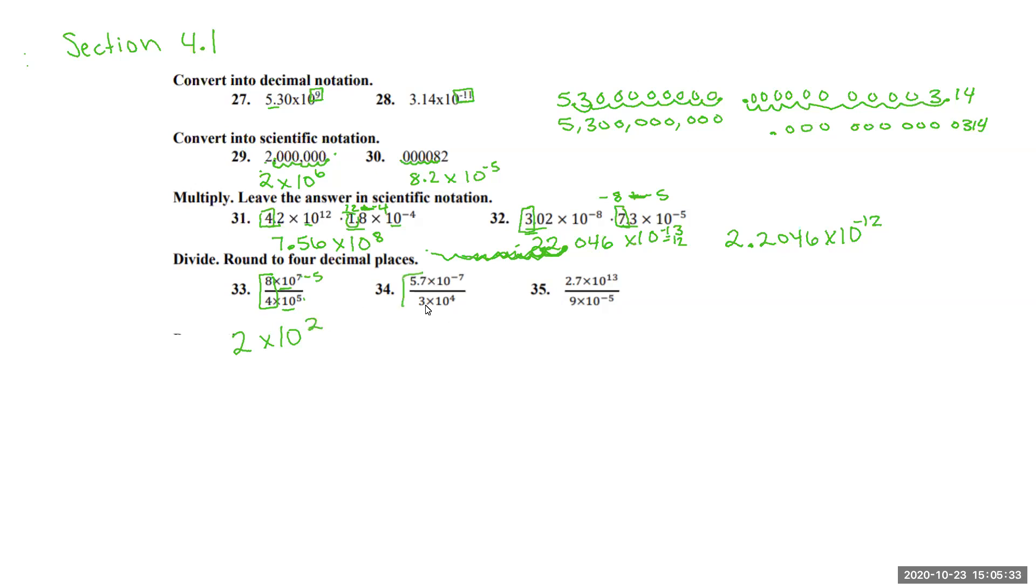Coming over here, we have 5.7 divided by 3, which is going to give us 1.9. And then in the exponent, we have a negative 7 minus 4, so that's going to give us a negative 11. And that's the answer for that one.